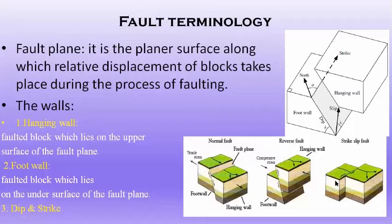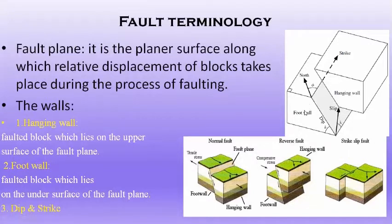Then we have the hanging wall — the faulted block which lies on the upper surface of the fault plane. When there is a fault plane, one block is on the upper side and one on the lower side. The block on the upper side is the hanging wall. The block which remains under the surface of the fault plane is called the foot wall.